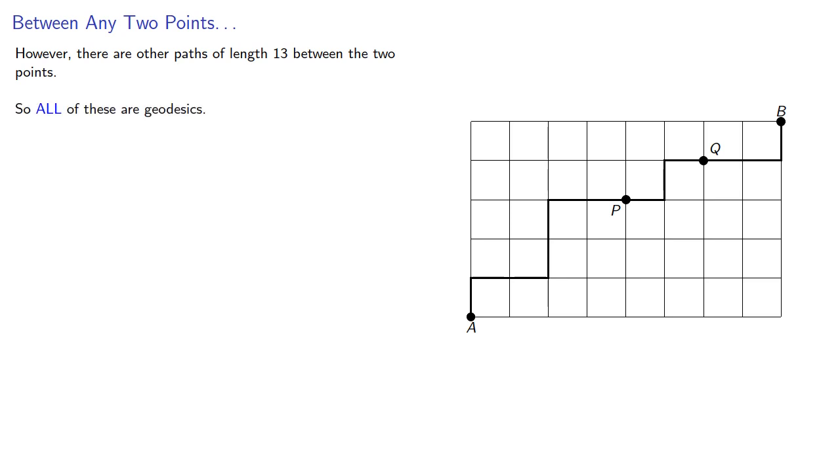And you might be a combinatorialist if the first question you ask is, how many? And in this case, how many geodesics exist between the two points?